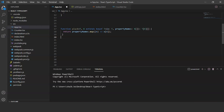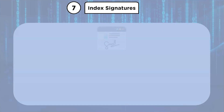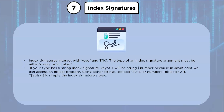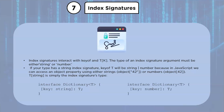In getProperty(o: T, propertyName: K), the compiler initiates the actual type of the key, and the return type changes depending on which property you request. Index signatures interact with keyof and T[K]. The type of an index signature argument must be either a string or a number. If your type has a string index signature, keyof T will be a string or number, since in JavaScript you can access object properties using either.